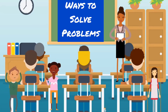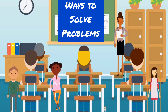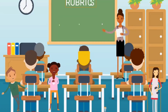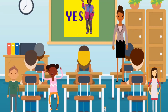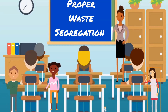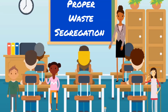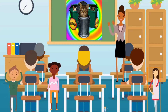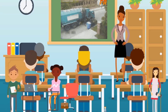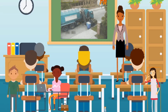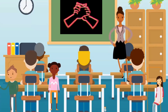Now, can anyone suggest some ways to solve this problem? Yes, you are right! Proper waste segregation is the key — more trash bins, regular garbage collection, and educating people about cleanliness.